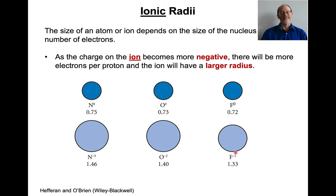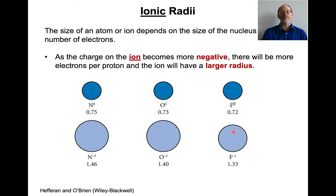On the flip side, if you add electrons — making negative ions — the radius will increase. Nitrogen, oxygen, and fluorine all have pretty close to the same atomic radius as atoms. But as you add electrons — fluorine becomes minus one, oxygen minus two, nitrogen minus three — the ionic radius gets bigger and bigger as the negative charge grows and more electrons are added.